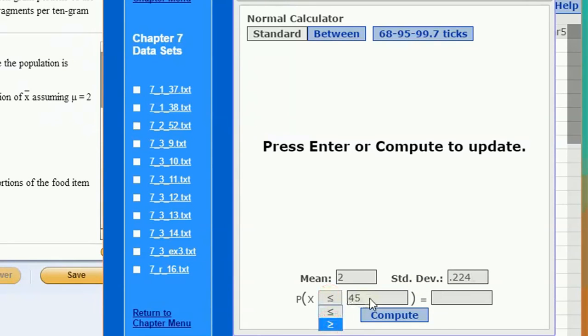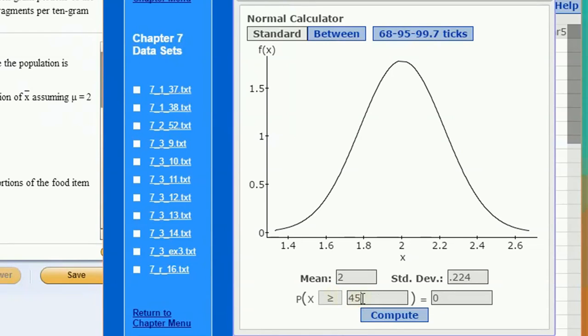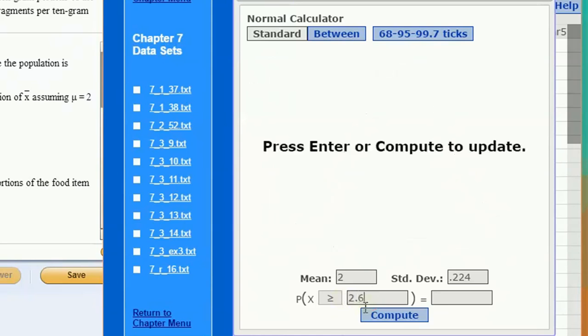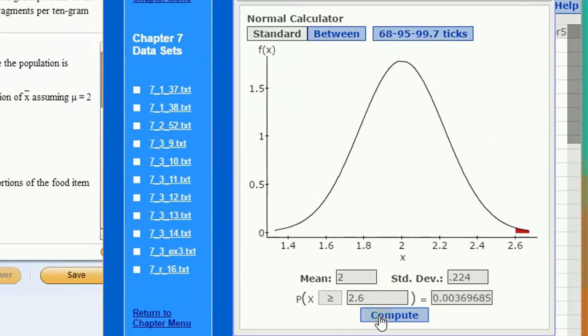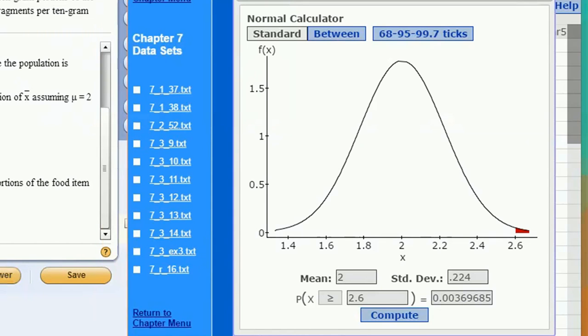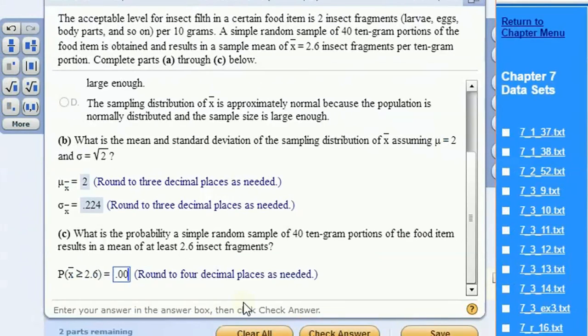The probability that we get a value greater than 2.6 for our sample mean is going to be quite small. Rounded to four decimal places, that comes out to be 0.0037.